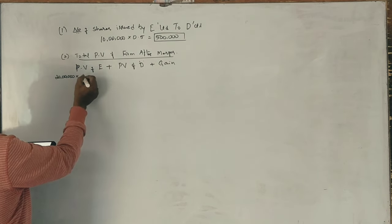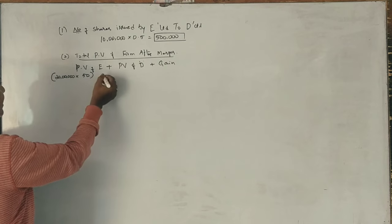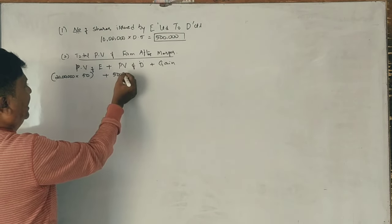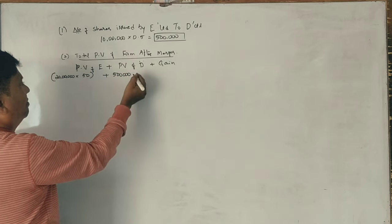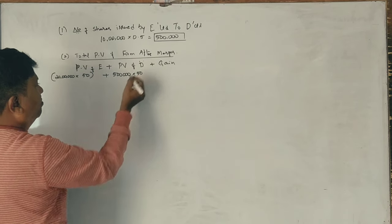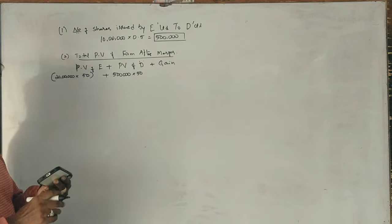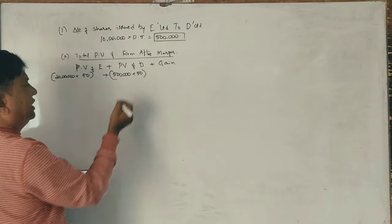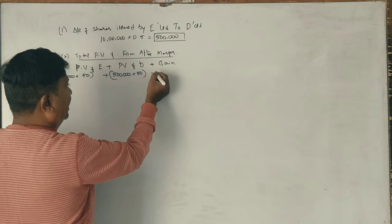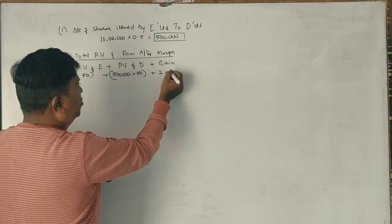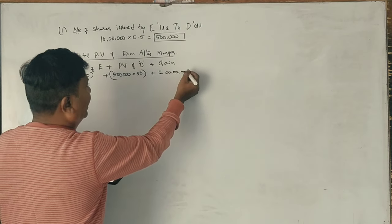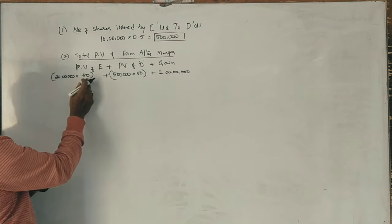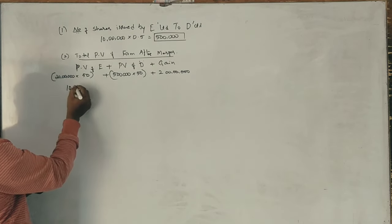The market price of E-Limited is ₹50 per share. So the market value of E-Limited is 20 lakhs shares into ₹50, which equals ₹10 crores.